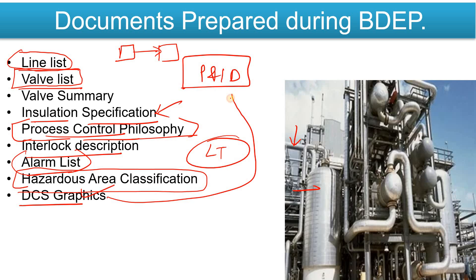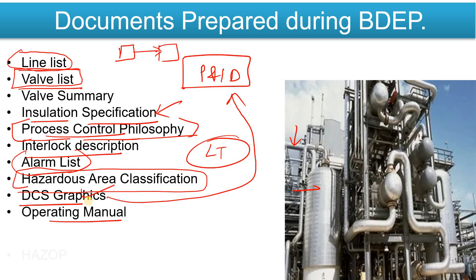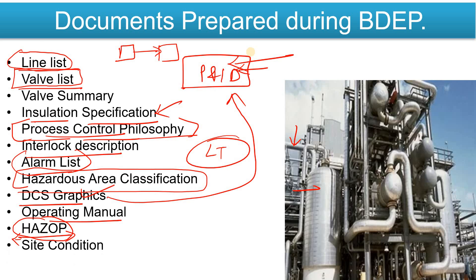DCS Graphics are also prepared with reference to the P&ID. Then there is the Operating Manual, which describes how the plant will be run. HAZOP — Hazard and Operability Study — is also very important; in HAZOP we check whether our P&ID is correct and whether the plant we are proposing is safe. If any issues are found, they are incorporated into the P&ID or design.